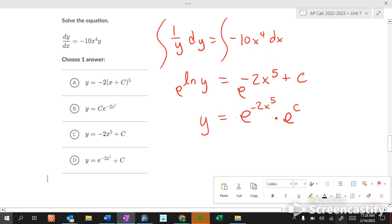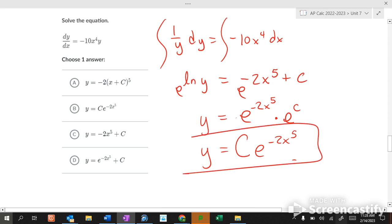What is e to the c? Just another constant. We are getting good. So y equals e to the c is just a c, so we put that in front. c e to the negative 2x to the 5th. Boom, boom, boom. That is huge in calculus. That's a very important concept to understand. c e to the negative 2x to the 5th.